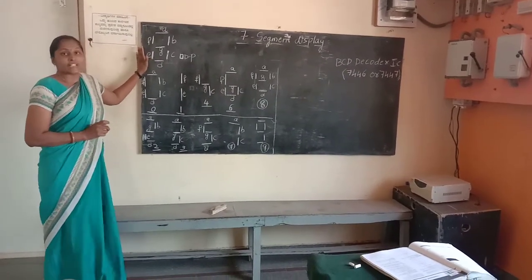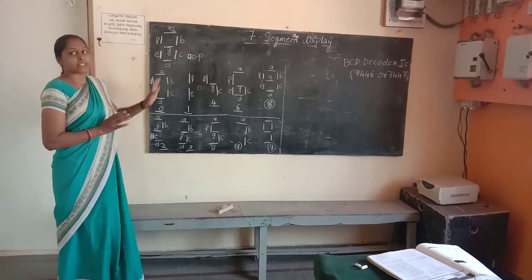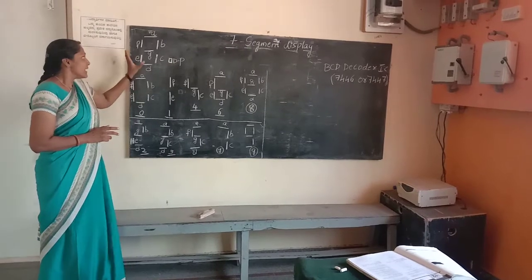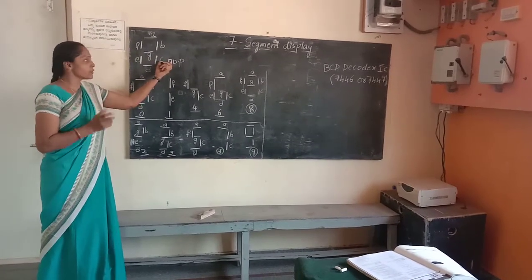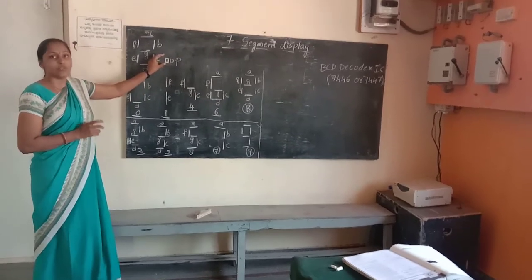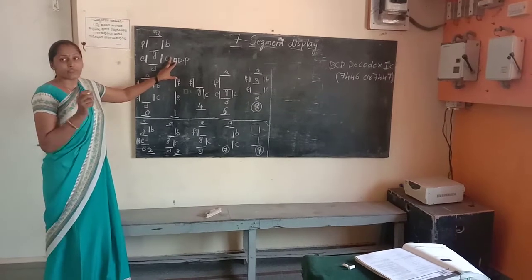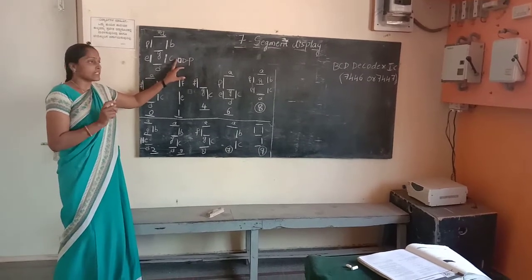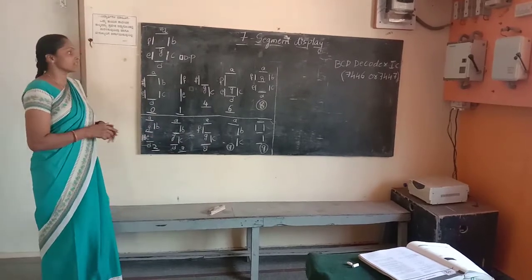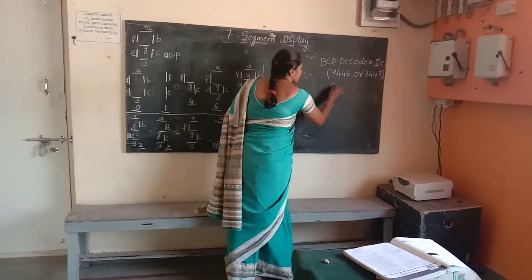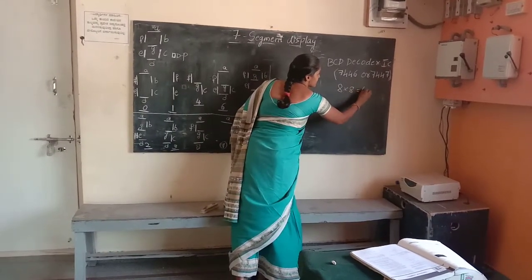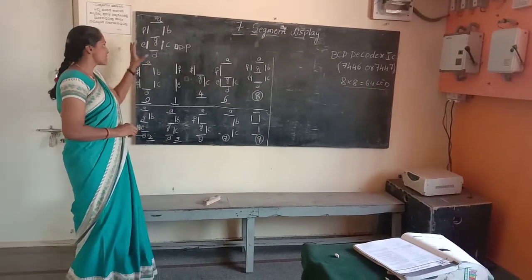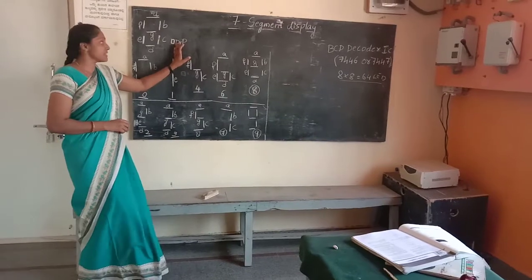And also the decade counter. This is the output display with 1 extra LED. That is why it can display complete 0 to 9 numbers. 8 into 8 is 64 — 64 LED or LCD units make up the display. It is 7 and 1, so this is a decimal point display.